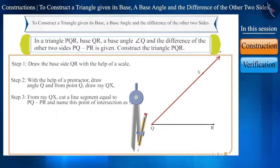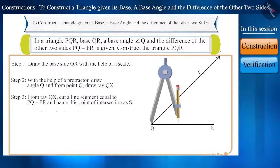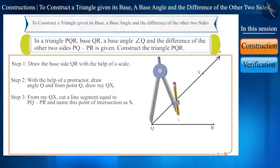Step 3. From ray QX, cut a line segment equal to PQ minus PR, which is equal to the measure of the difference of the length of the two sides, and name this point of intersection as S. Step 4. Now join point S to point R.